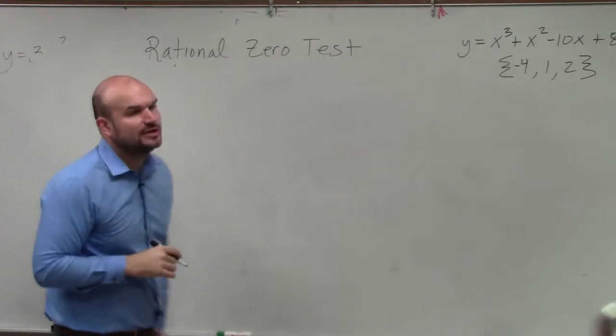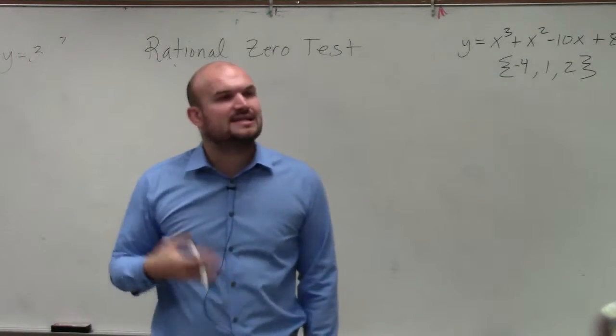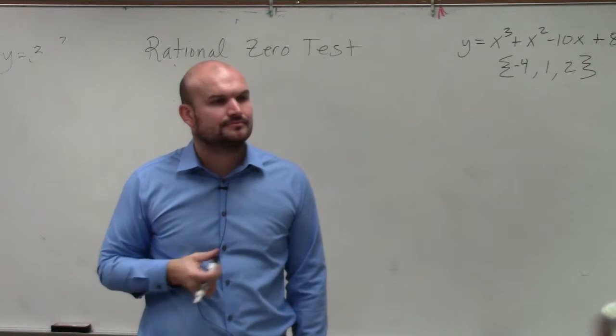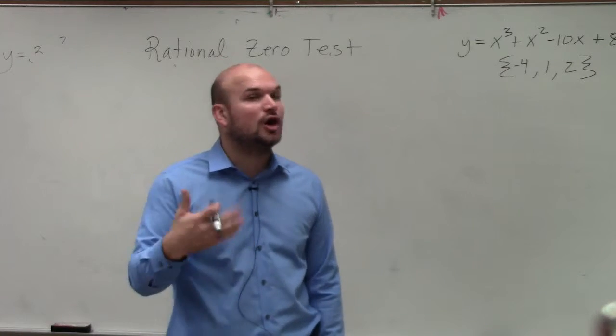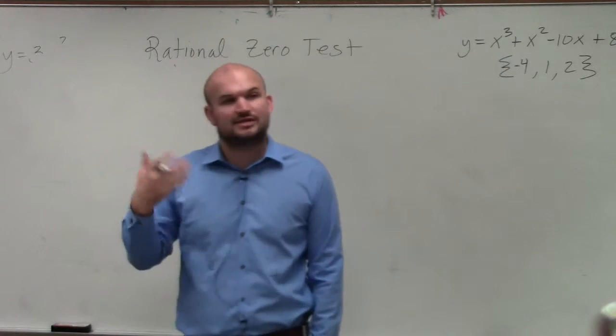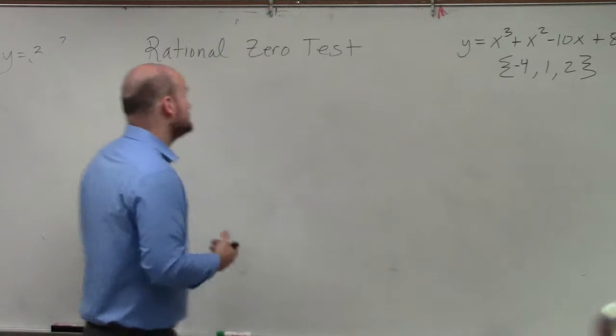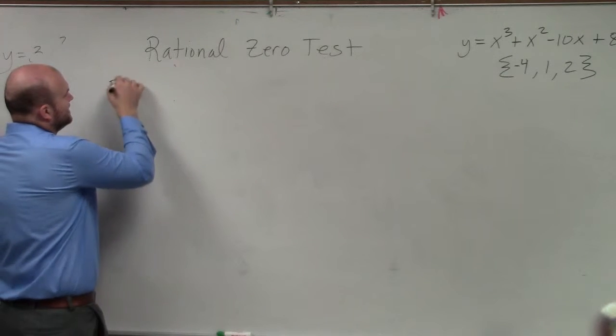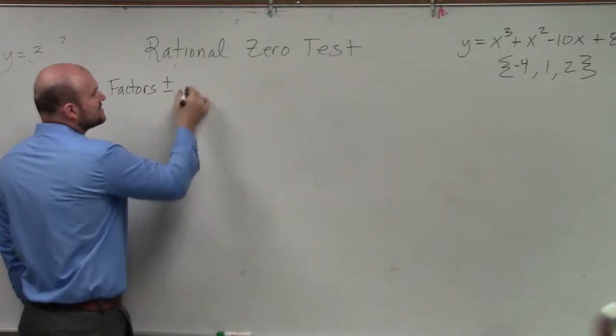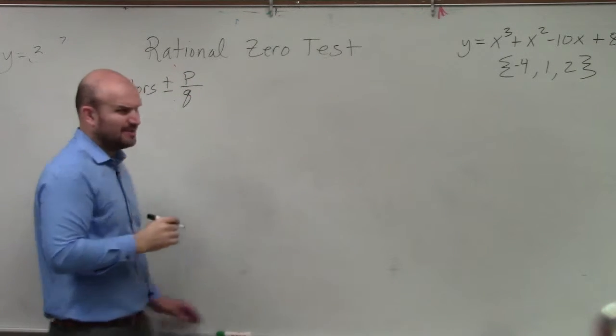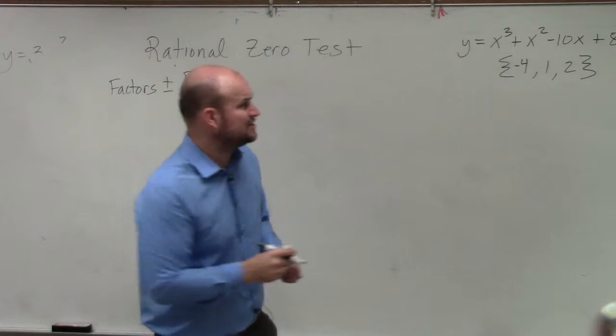And what the rational zero test tells us is that given a polynomial, we can determine all of the possible rational zeros. So to do that, what we're basically going to do is take the factors plus or minus of p over q.